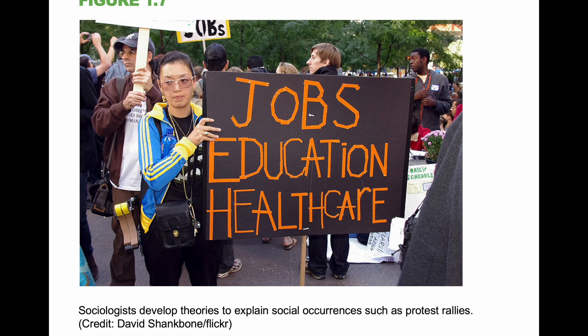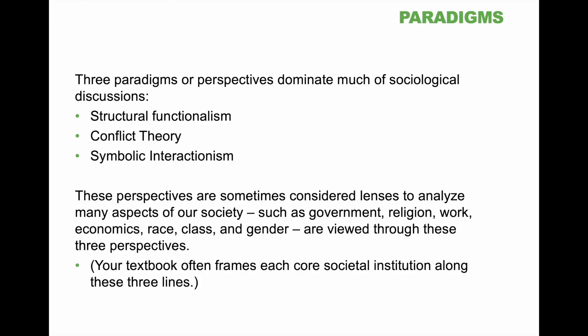Sociologists develop theories to explain social occurrences such as protest rallies — paradigms. Three paradigms, or perspectives, dominate much of sociological discussion: structural functionalism, conflict theory, and symbolic interactionism. These perspectives are sometimes considered lenses to analyze many aspects of our society, such as government, religion, work, economics, race, class, and gender. Your textbook often frames each core societal institution along these three lines.